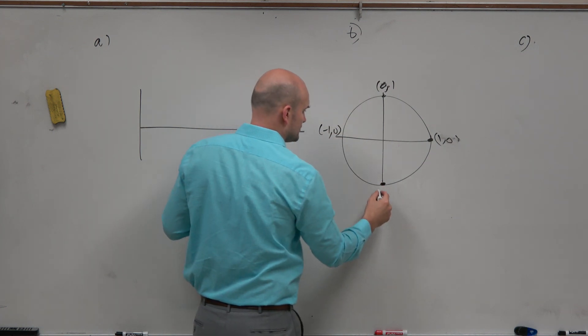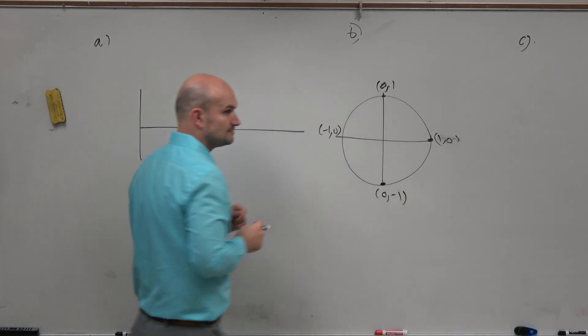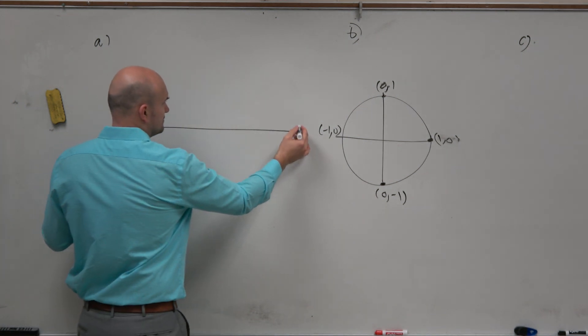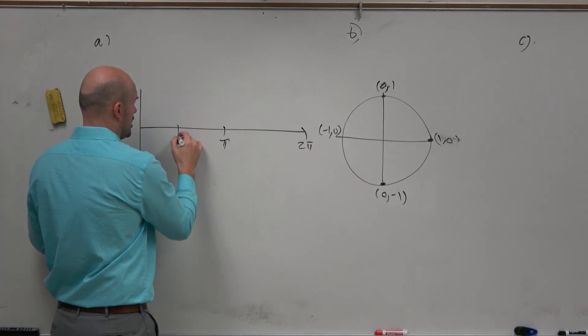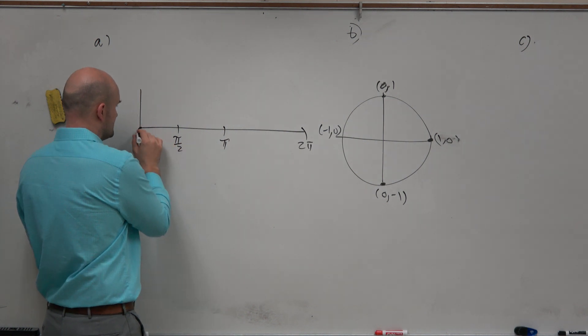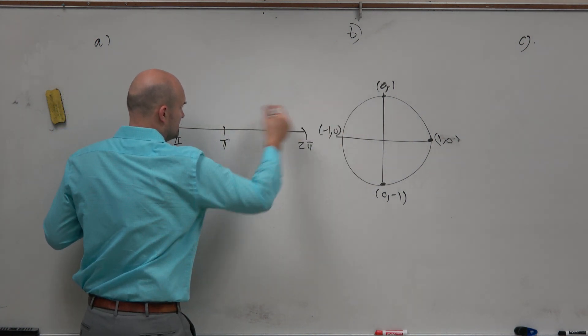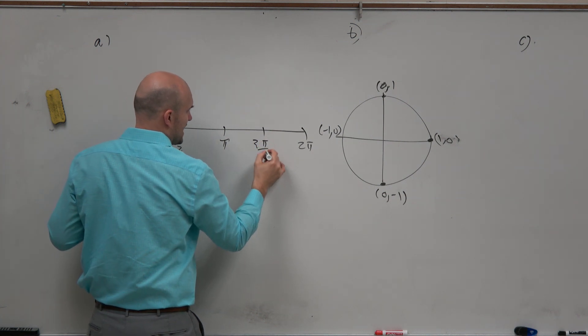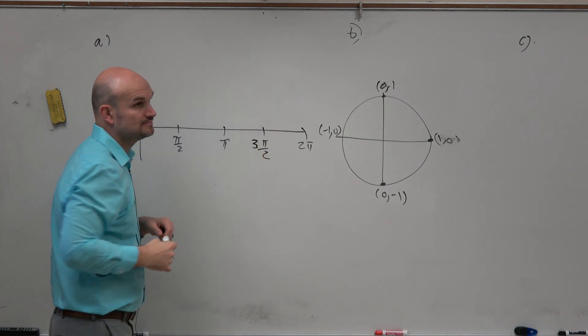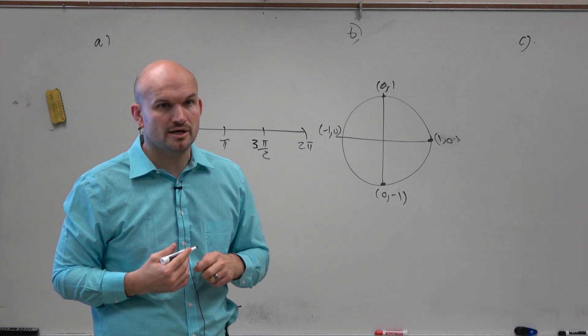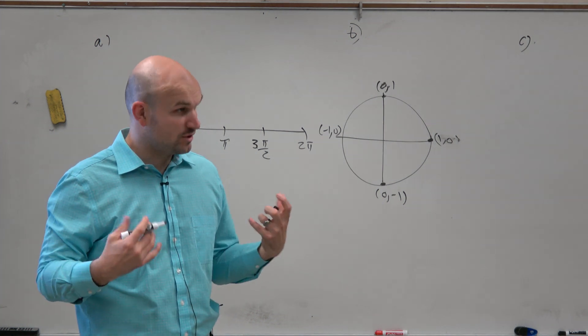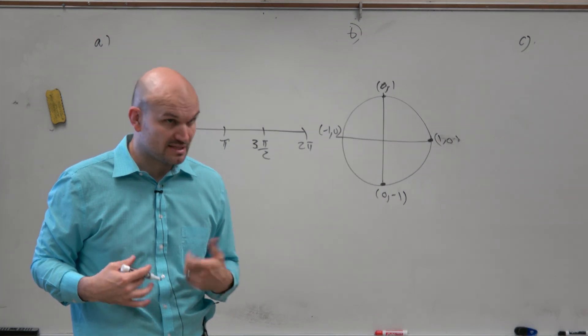And then this point is going to be 0 comma negative 1. Our basic angles here is 0, pi halves, pi, 3 pi halves, and 2 pi, all evenly spaced out from one another. Remember, when we have a coordinate point on the unit circle, sine represents the y-coordinate.